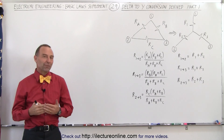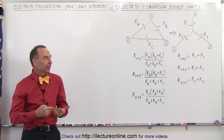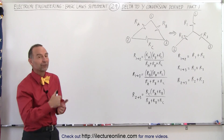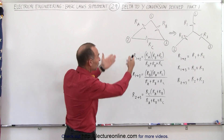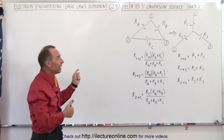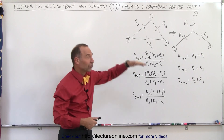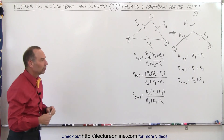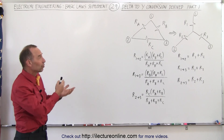Welcome to Y Lecture Online. We've been asked by some of our viewers if we could make a video describing how the equations were derived to do the delta-to-Y conversions. Whenever we see a circuit that has a delta in it with resistors, it's quite difficult to find the equivalent resistance. It's easier to convert it into a Y structure, which makes it a lot easier to calculate the resistance of that circuit. So how were those conversion equations derived?